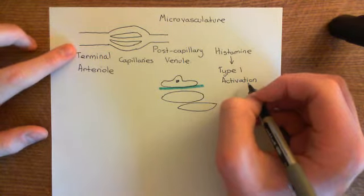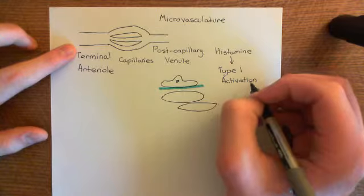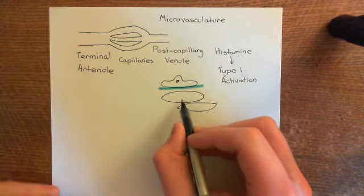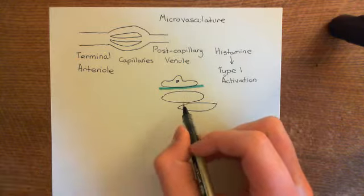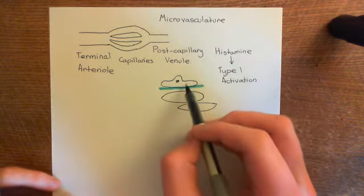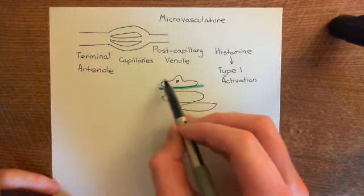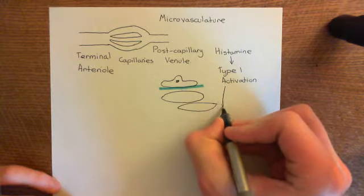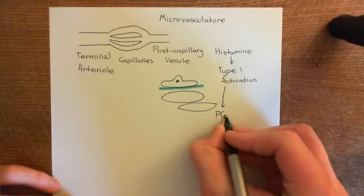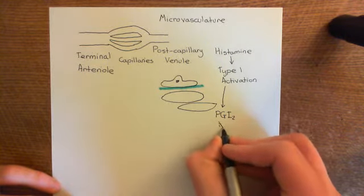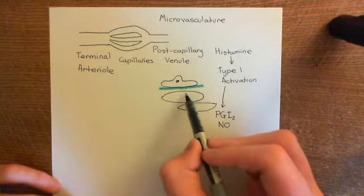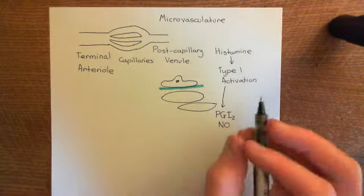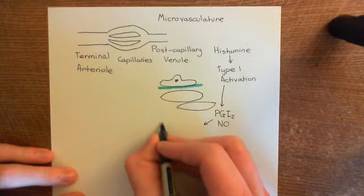Type 1 activation causes vasodilatation of the terminal arterioles. Although histamine acts on vascular smooth muscle cells to cause contraction, it also acts on the endothelial cells, which start producing powerful relaxant molecules — prostacyclin and nitric oxide. Their relaxant power exceeds the contractile effect, so the overall result is vasodilatation, widening the lumen of the terminal arterioles and increasing blood flow through the lamina propria.